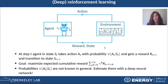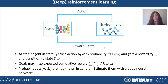In general, the probabilities with which the agent takes actions are not known and need to be estimated. A common way of estimating the probabilities is by using a deep neural network. In this case, reinforcement learning takes the name of deep reinforcement learning, and this is what we are going to do. The agent will be a deep neural network.